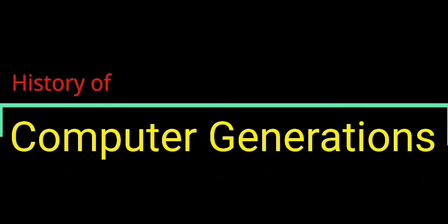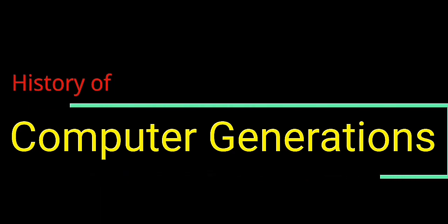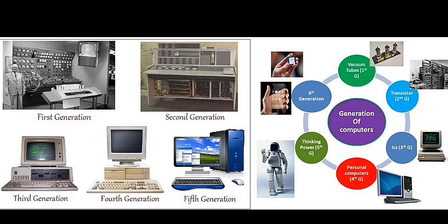We will cover the first generation, second generation, third generation, fourth generation, and fifth generation of computer history. Based on the technology used in building a computer, computers are divided into mainly five generations. Let us briefly learn about the different computer generations.